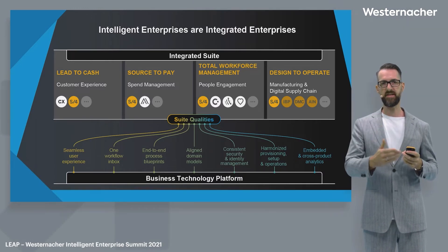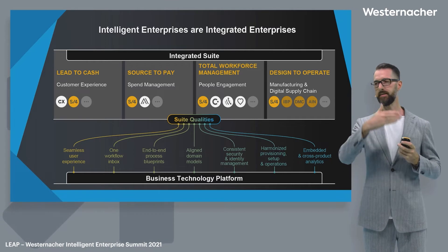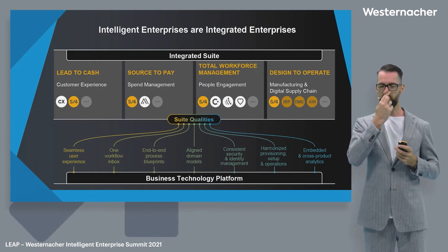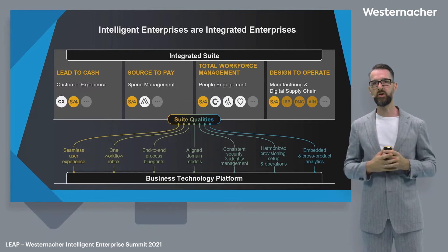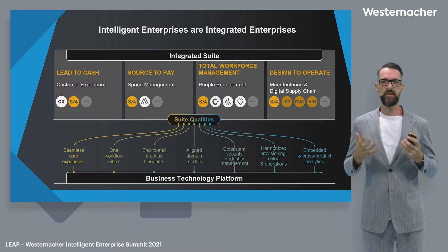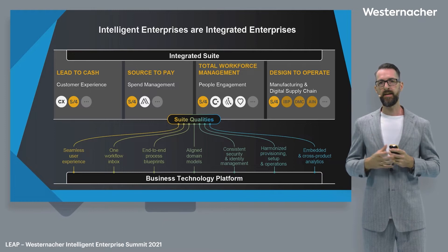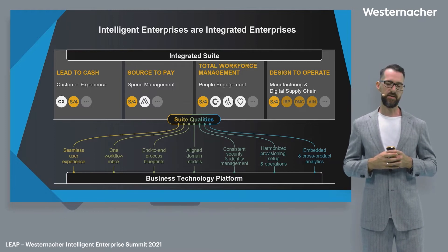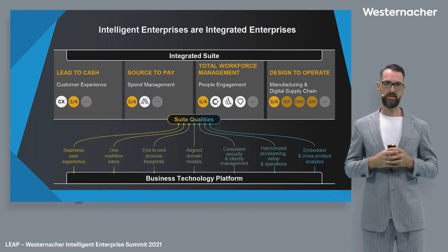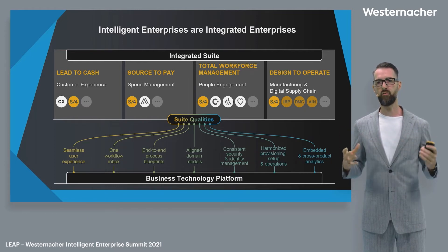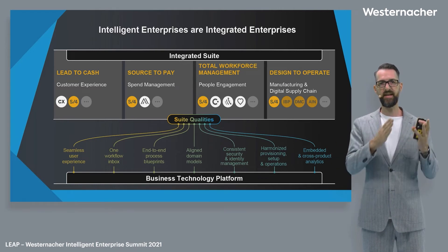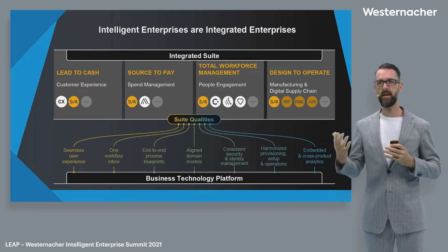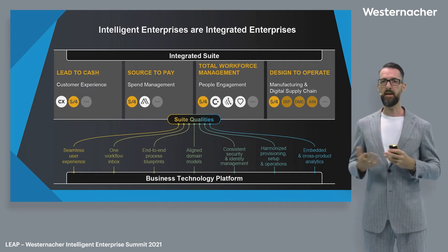With the One Workflow Inbox, you can see all tasks from finance — for example, vacation requests, purchase requests — or as a manager, SuccessFactors requests. The next point is end-to-end blueprint models for end-to-end processes. We are currently defining a centralized reference architecture for the common ERP, but also for dedicated industry solutions like automotive, retail, and manufacturing.